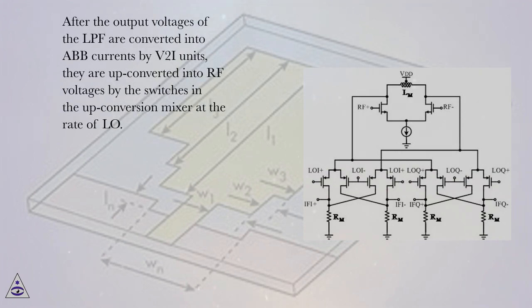After the output voltages of the LPF are converted into ABB currents by V2I units, they are upconverted into RF voltages by the switches in the upconversion mixer at the rate of low.